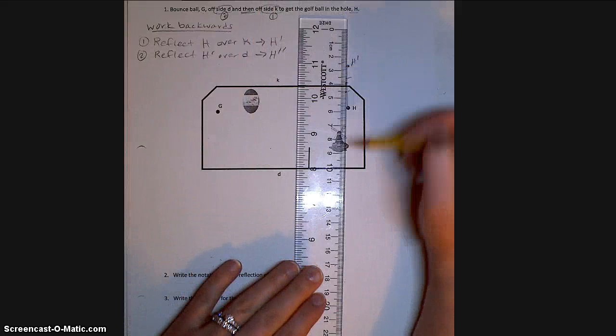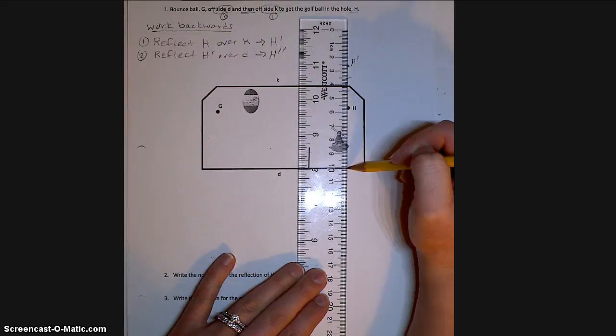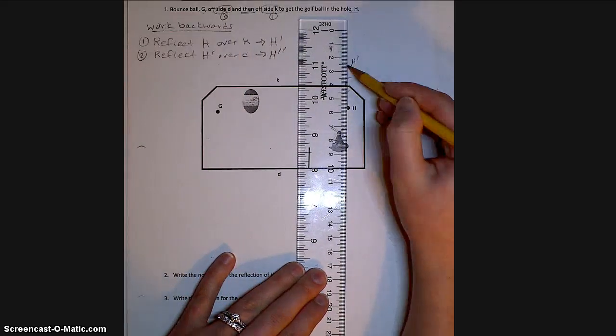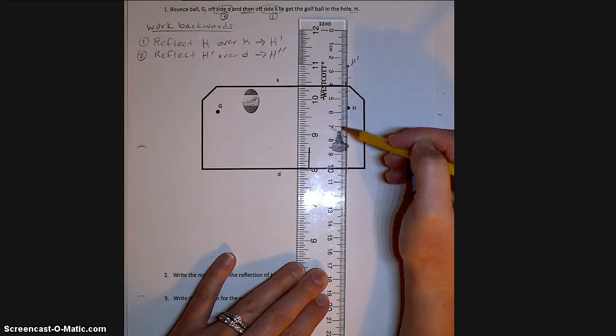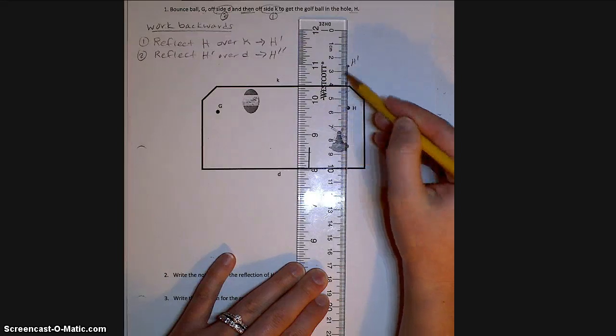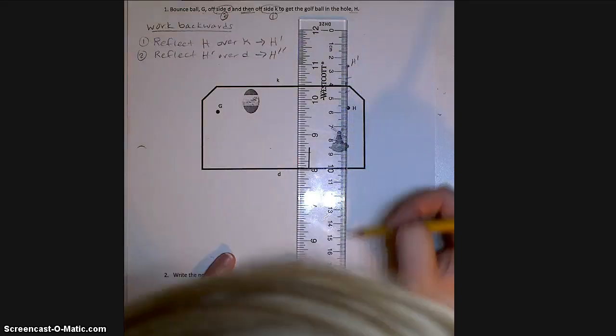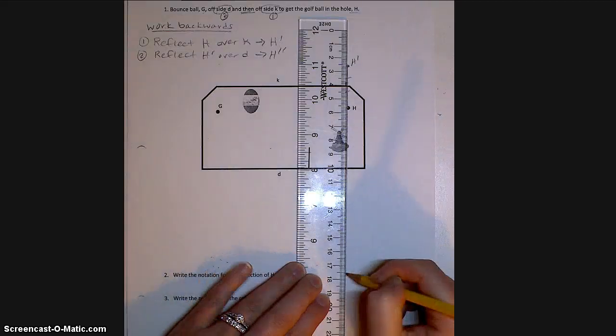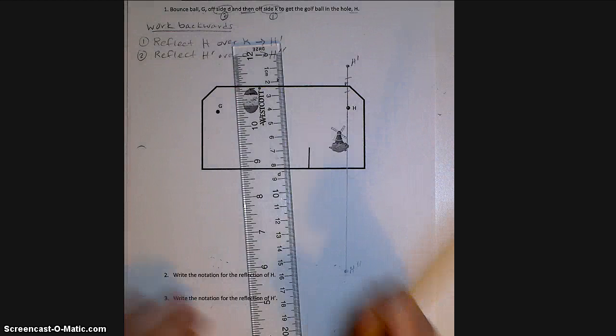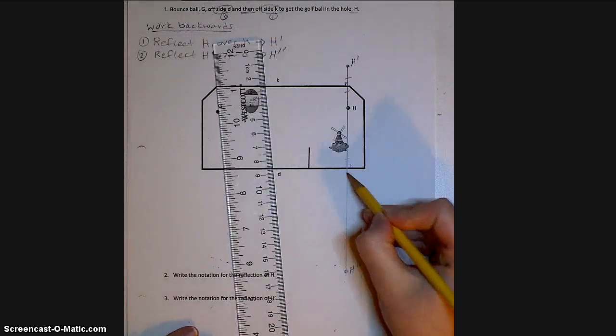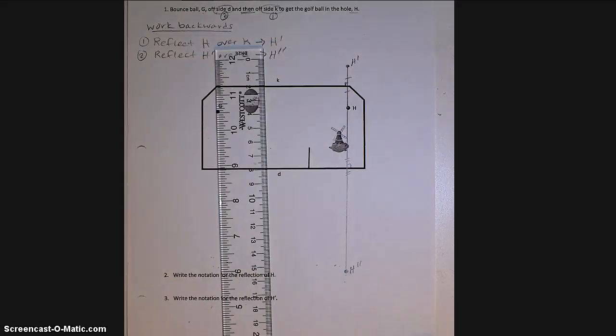So I'm going to again line up my 10 mark with my line of reflection and the edge of my ruler with H prime. I'm going to measure 1, 2, 3, 4, 5, 6, about 7.5 is H double prime. And again, I want to include my symbols, my right angles, and tick marks.